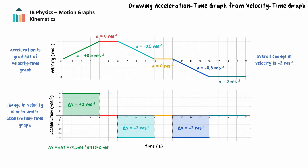We can read the total change in velocity directly from the velocity-time graph. In the first 20 seconds, the object's total change in velocity is negative 2 meters per second — the object's initial velocity is 0 meters per second and the final velocity is negative 2 meters per second. If we add the areas bounded by the acceleration-time graph in the same time period, we get the same change in velocity: negative 2 meters per second.